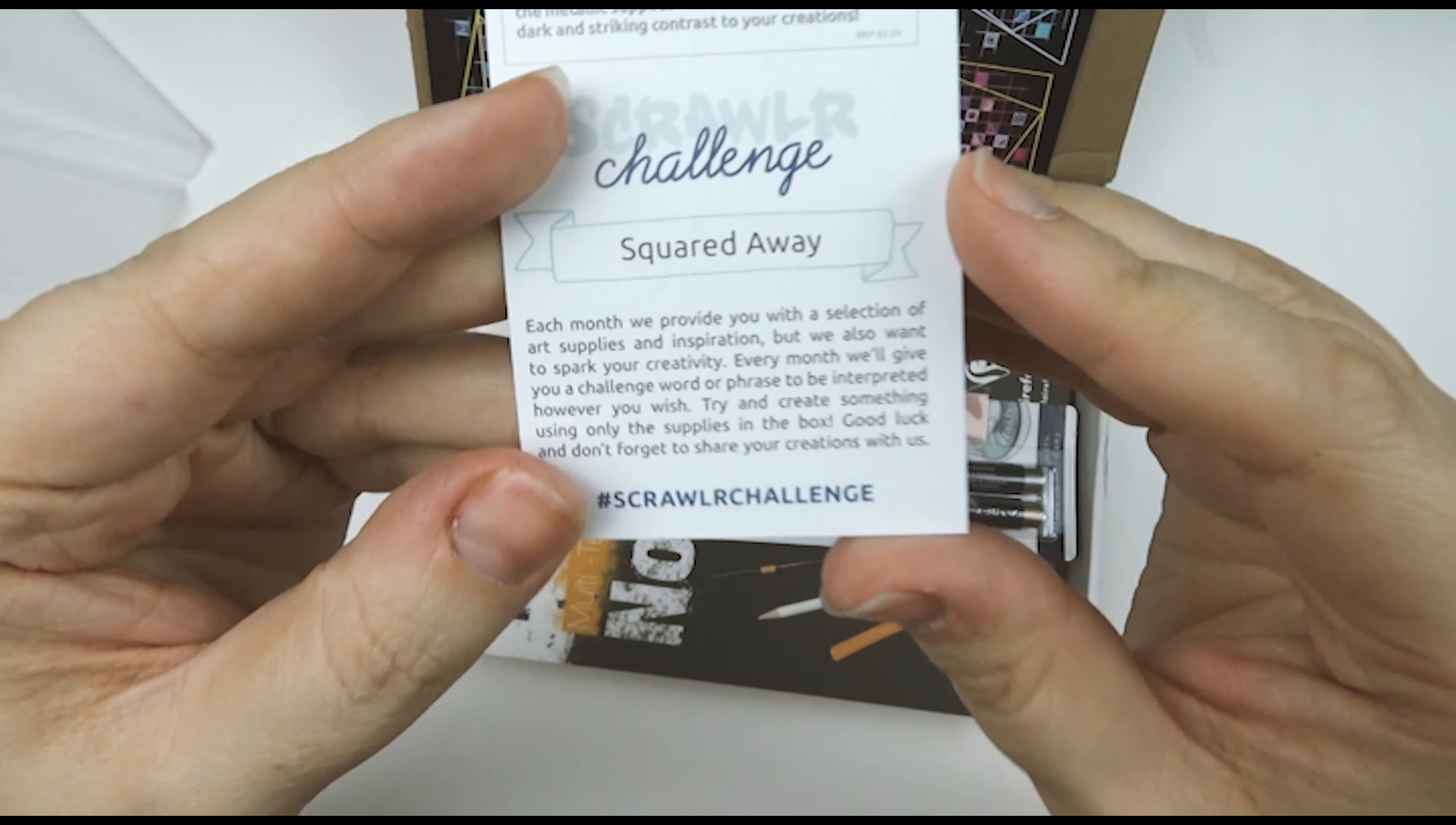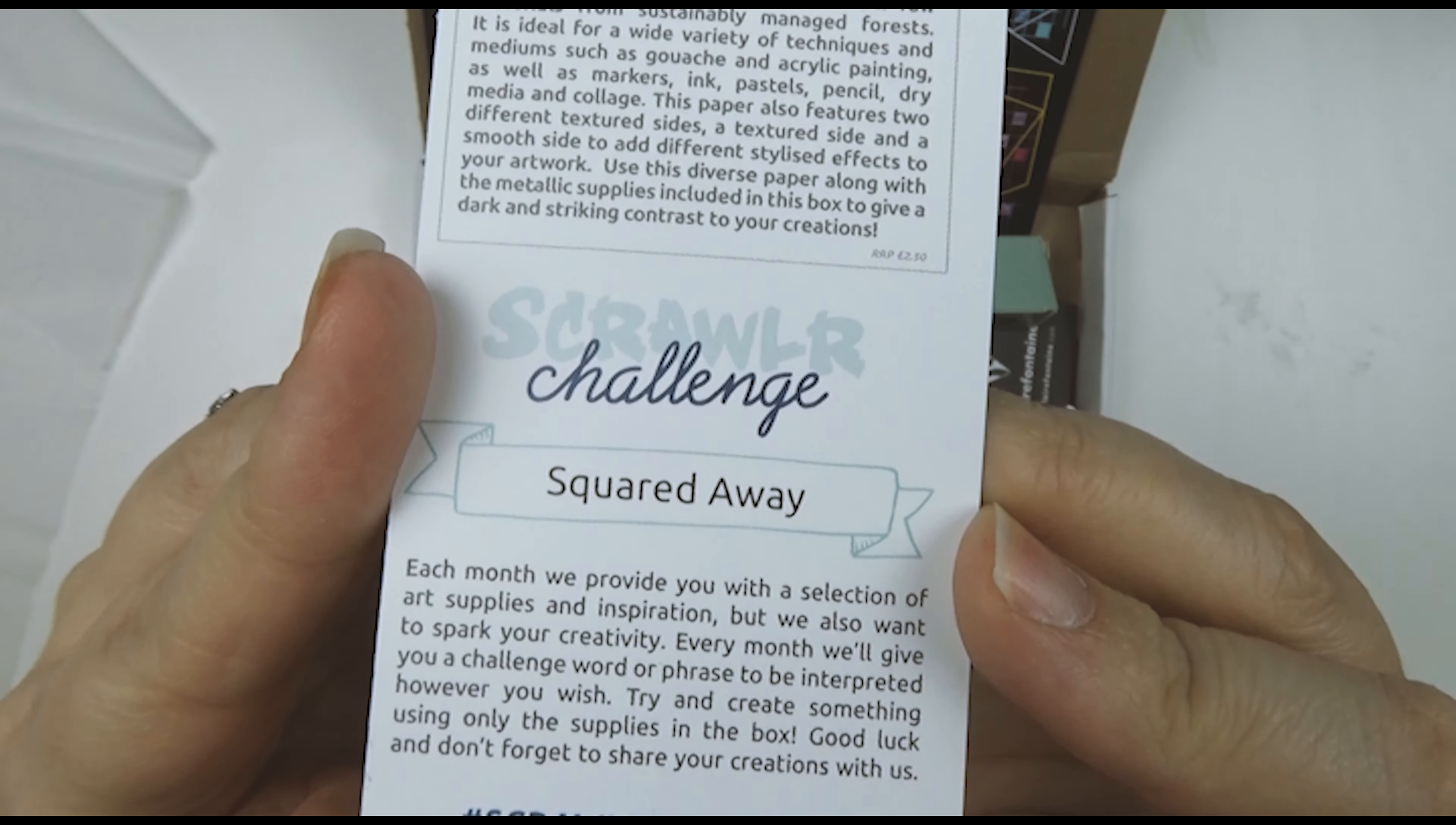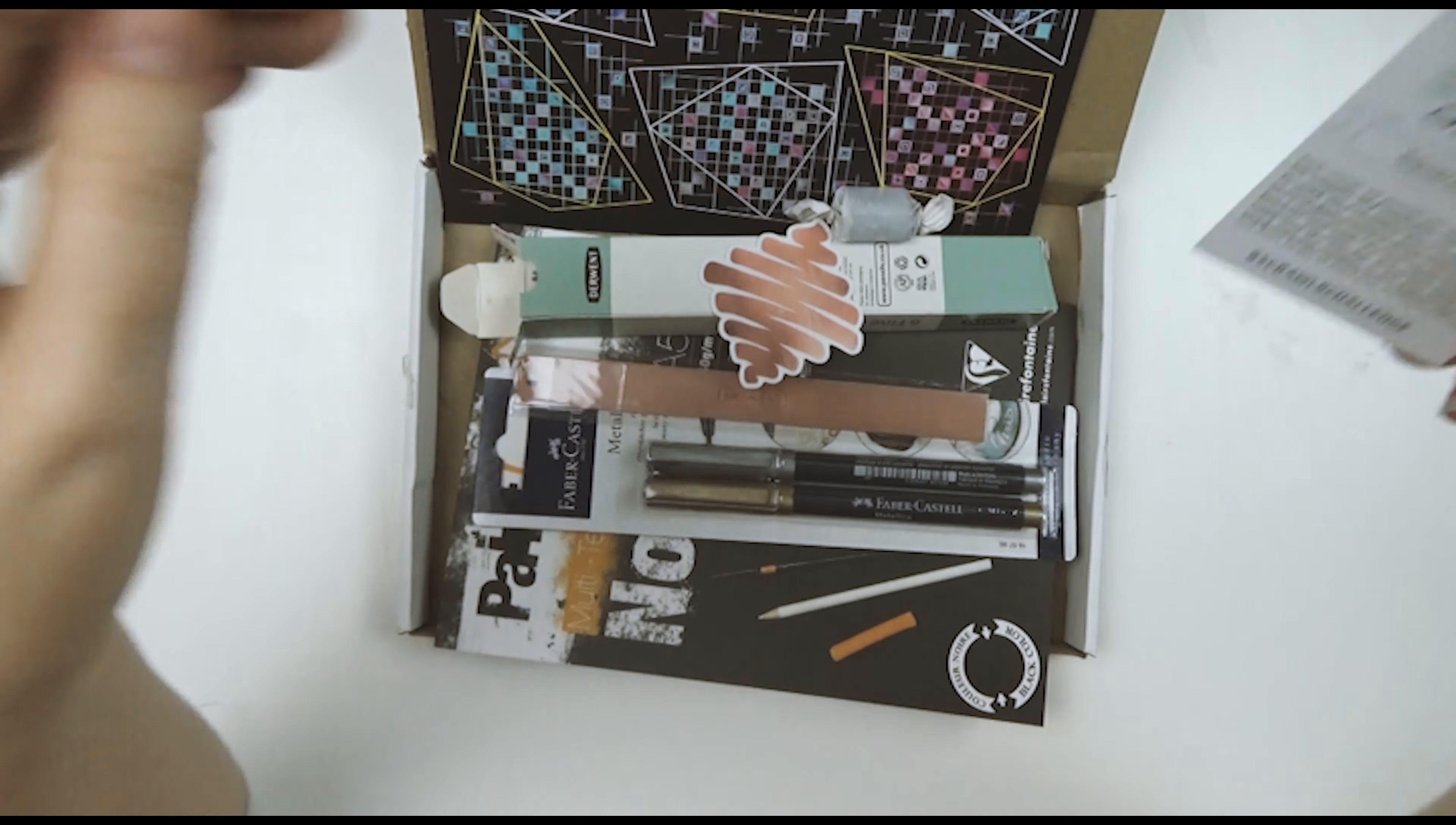So there is a challenge every month and this month it is squared away. Okay. Squared. I suppose that explains the ruler.